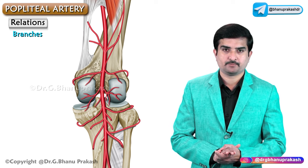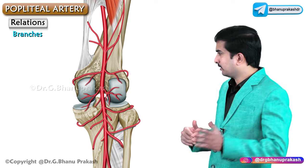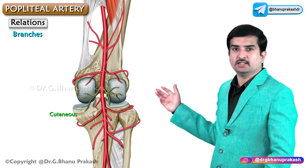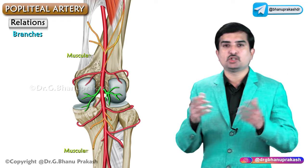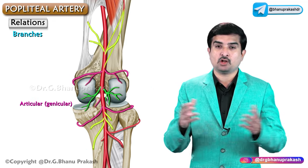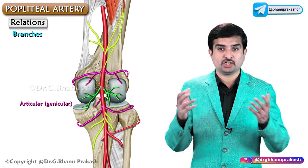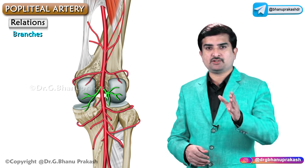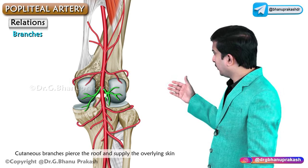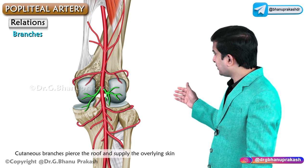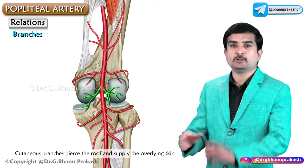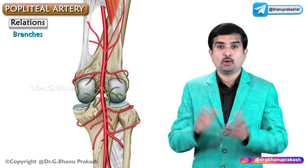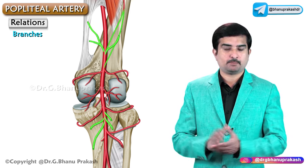The branches of the popliteal artery are divided into three groups: cutaneous, muscular, and articular, which is also called the genicular branch. The cutaneous branches pierce the roof and supply the overlying skin of the popliteal fossa area.